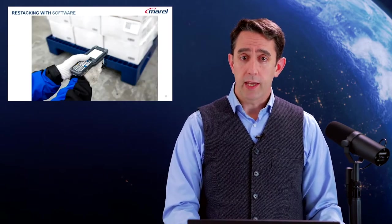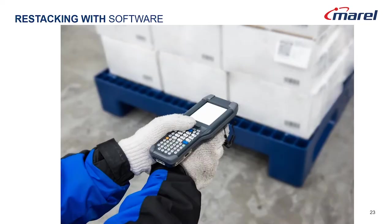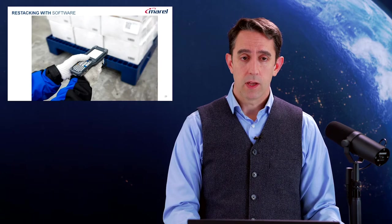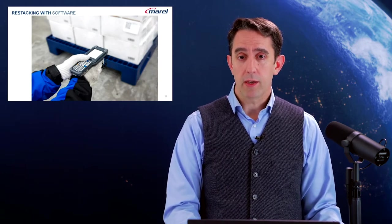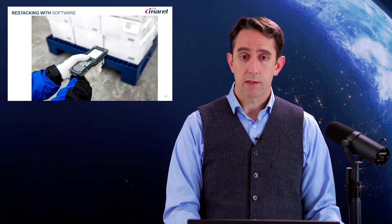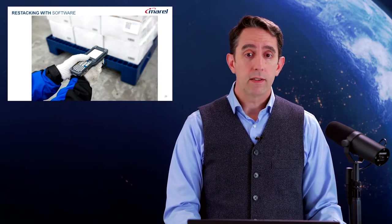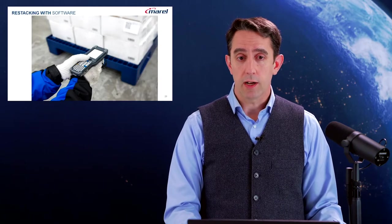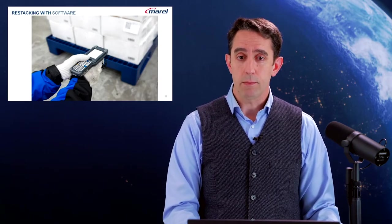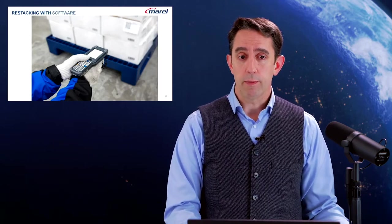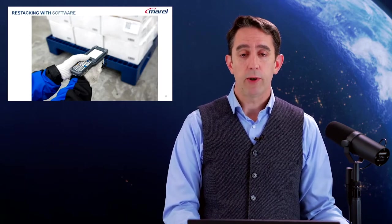What advantages do we get by having digital records for restacking? We can see the real contents of each pallet digitally on the scanner client. Once the work is done, we can make a reprint with the actual contents for each pallet. In the event we forget to reprint the pallet's contents, the actual contents are still visible in the system and on the scanner. As an added bonus, we can print the customer's information on the pallet's license plate for easy identification.